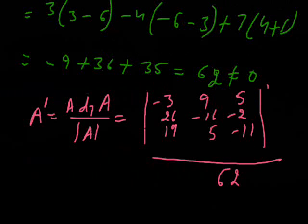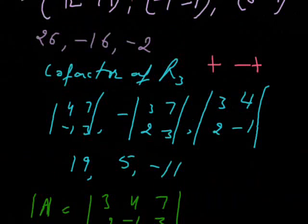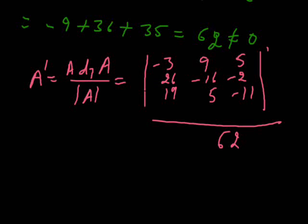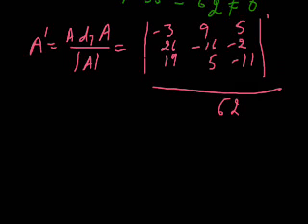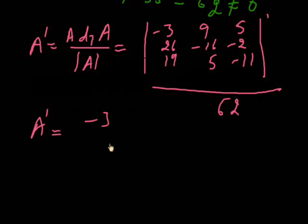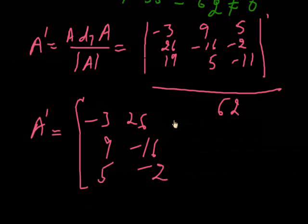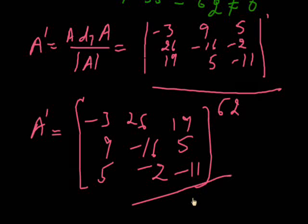Now, the inverse of the matrix is the transpose of these cofactors. First row, second row, and third row — we are writing the cofactors here. Now we are calculating its transpose, changing rows into columns and columns into rows. The resulting inverse matrix values are: -3, 9, 5 / 26, -16, -2 / 19, 5, -11, all divided by 62.